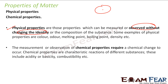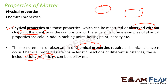But to measure the chemical property, you have to go through a chemical reaction. For example, if you want to find the acidity of a particular solution, you have to go for an acid test. The moment you are going for an acid-base litmus test, you are talking about a chemical reaction.